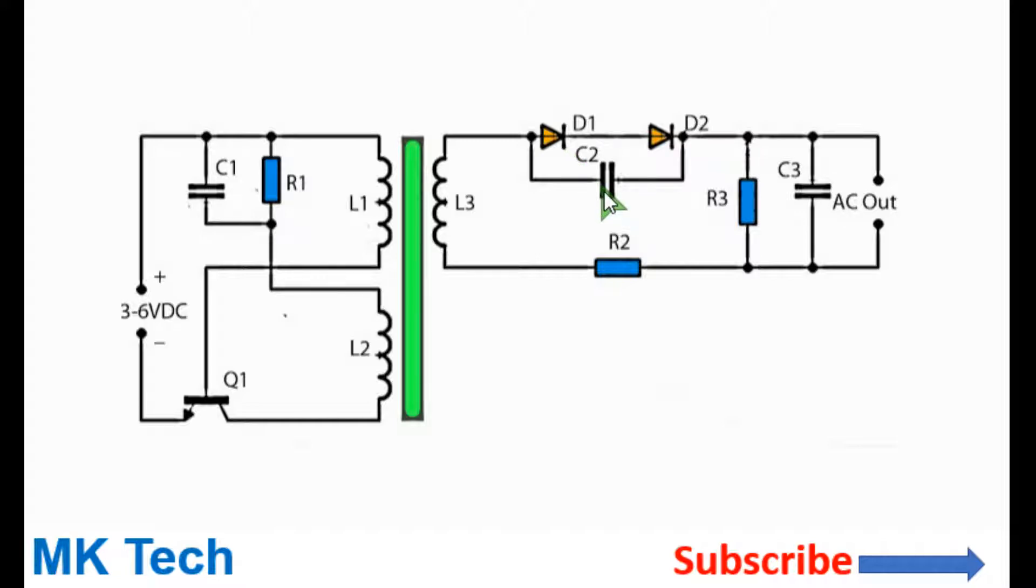The capacitor C2 protects the diode. On the output side you have this minimum load resistor R3. Ensure it's 1 megohm rated at least 1 watt.